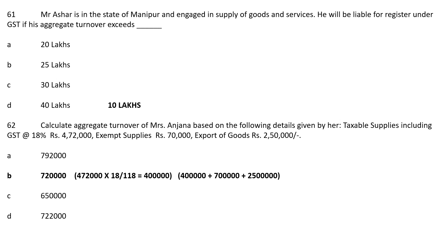Question 61: Mr. Akshar is in the state of Manipur and engaged in supply of goods and services. He is liable for registration under GST when his aggregate turnover exceeds — Option A: 20 lakhs; Option B: 25 lakhs; Option C: 30 lakhs; Option D: 40 lakhs. The correct answer is not in the options. Since Manipur is a special category state, the aggregate turnover limit is Rs 10 lakhs.